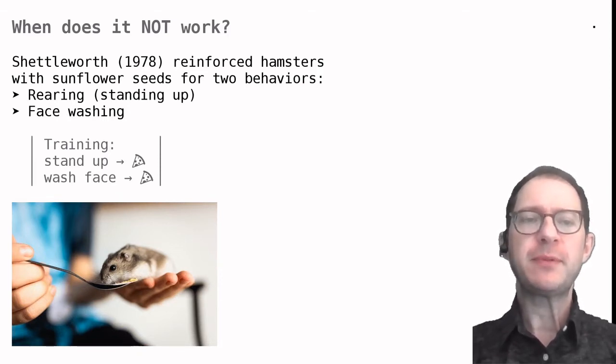For example, Shettleworth offered sunflower seeds to hamsters when they performed either of two behaviors: rearing, which means standing up, or washing their face. Washing is a natural behavior in hamsters. They lick their paws and scrub their face with them.